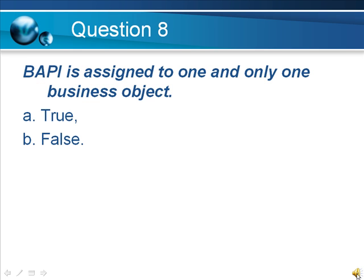Question 8. An API is assigned to one and only one business object. A. True, B. False.